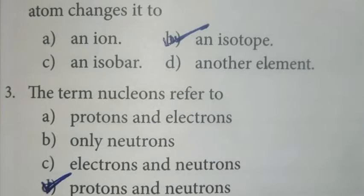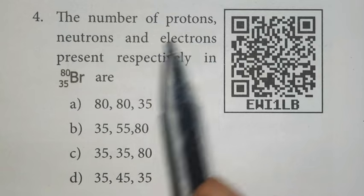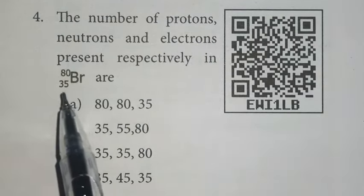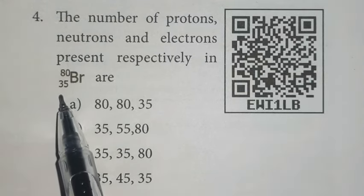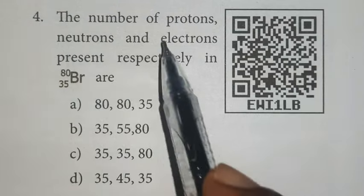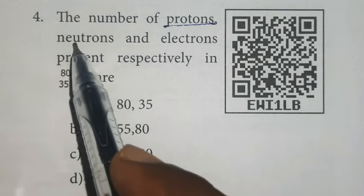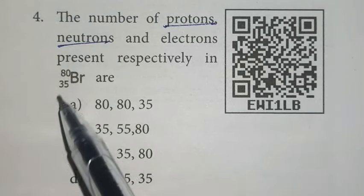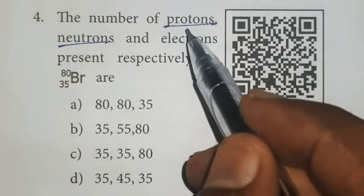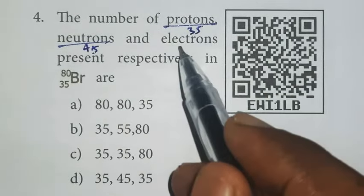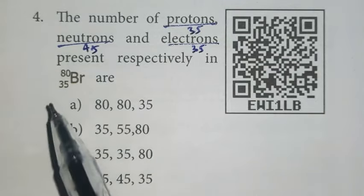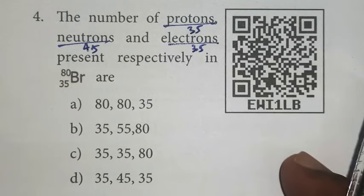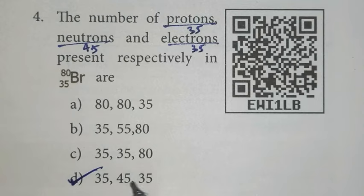Fourth one: the number of protons, neutrons and electrons present respectively in bromine-35-80. Number of protons is 35. Number of neutrons: mass number minus atomic number, 80 minus 35 equals 45. Proton number 35, neutron number 45, electron number also 35 because electron number, proton number, and atomic number are all the same. According to this, option D is the right answer: 35, 45, 35.